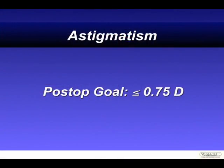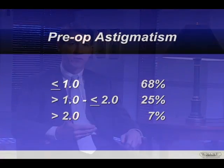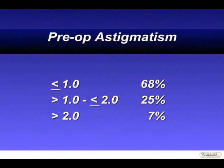Anything over three-quarters of a diopter of astigmatism is going to create problems with uncorrected visual acuity after these procedures. If we look at the mix of patients coming in preoperatively, about three-quarters of these patients will likely not need any surgery on the cornea in order to reduce astigmatism, but plenty will.